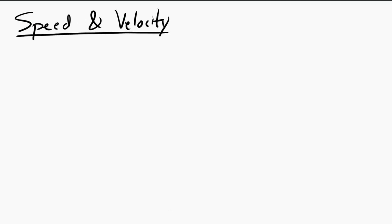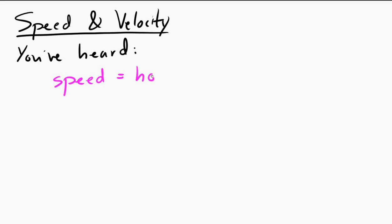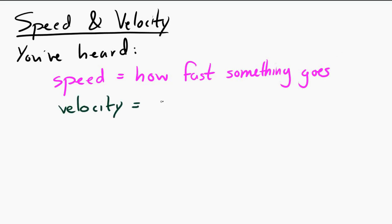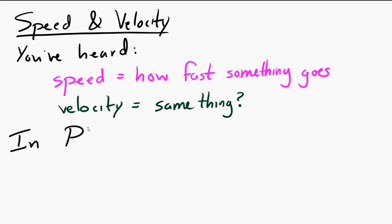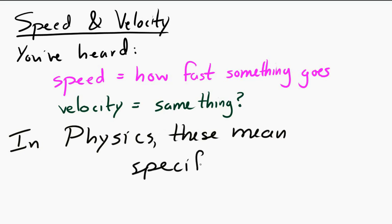Let's take a look at speed and velocity. You have almost certainly heard the words speed and velocity before. Speed, you've probably been told, is how fast something is going. And velocity is four syllables that mean exactly the same thing. In physics, however, those two terms have specific meanings and they are not the same.